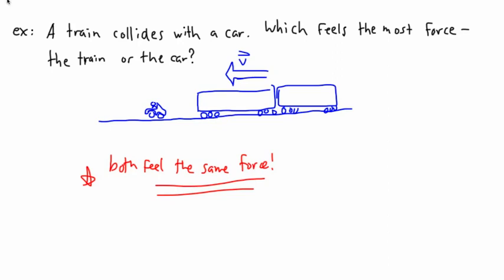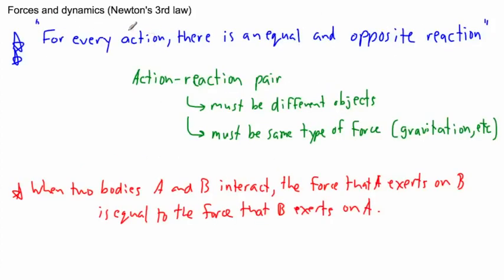I was reminded of this watching a cheesy action movie. One character gives a head butt to another — smashes their forehead against the other person's face — and the one who got hit fell unconscious while the attacker was fine. That's not realistic. Assuming they have the same head mass, both feel the same force. More realistically, if two people smash their heads together, both go down.